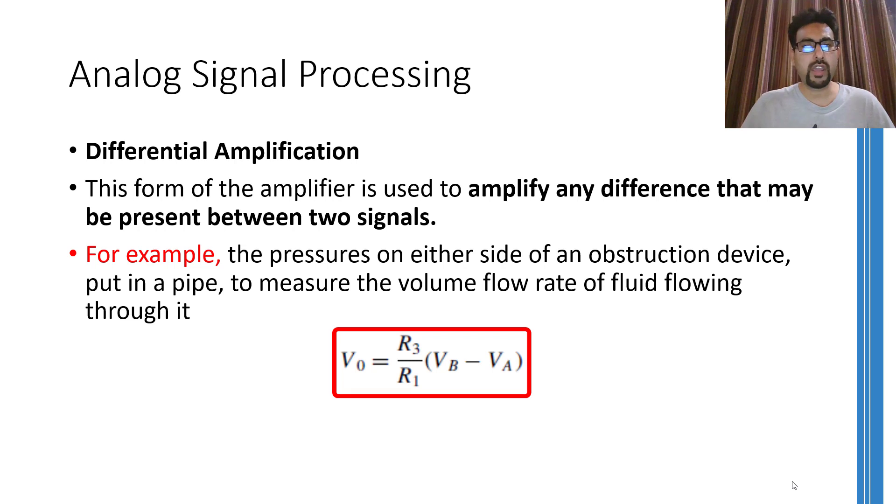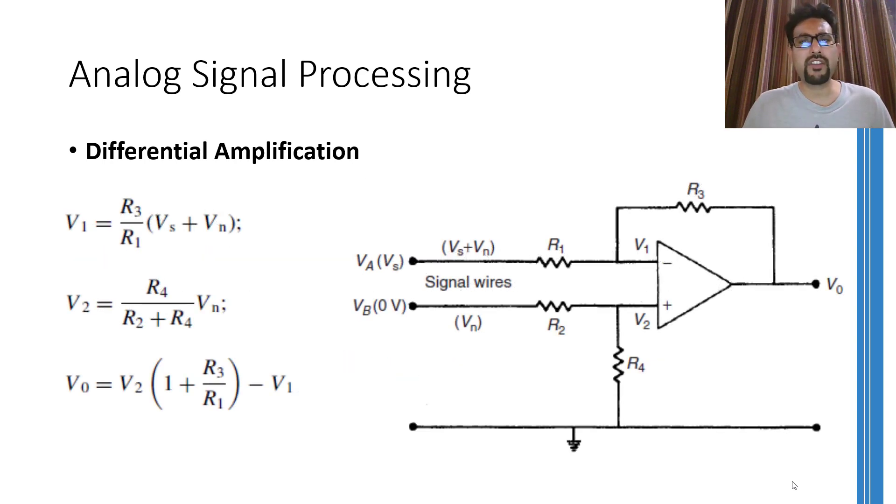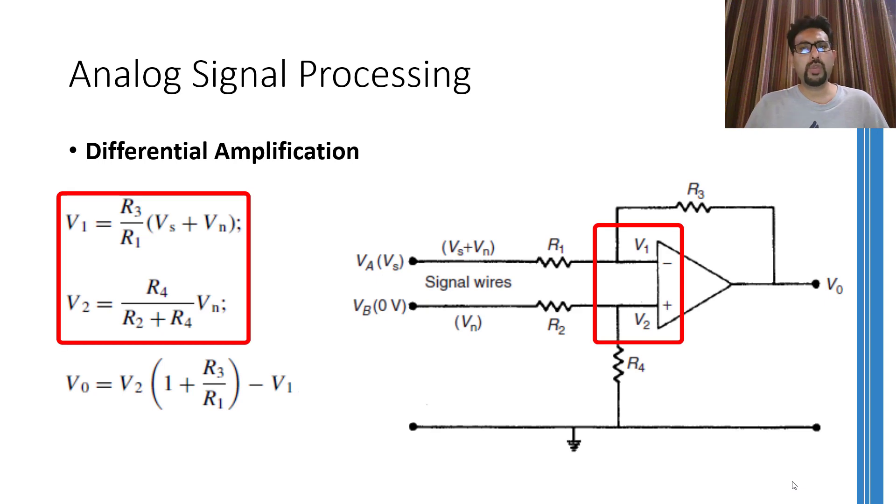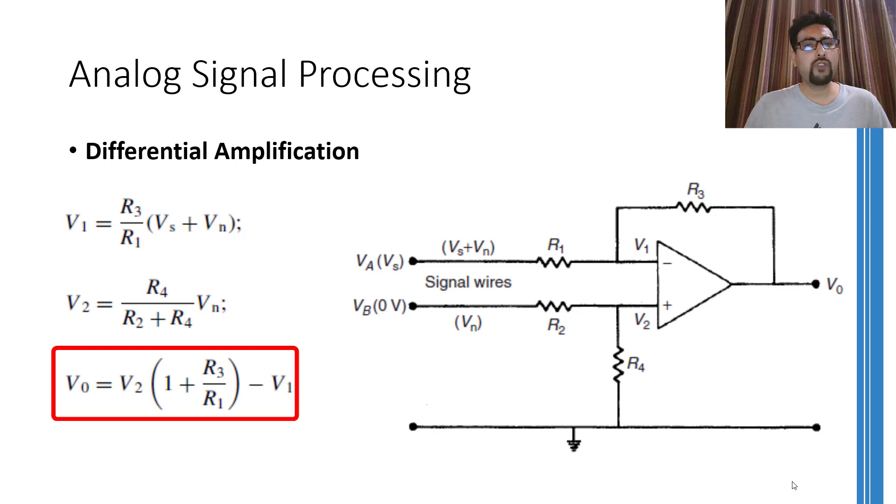So by equation over here, you can see that you are going to take the difference of two voltages and then the resulting voltage with some factor that can amplify or attenuate this difference. The circuit for implementation of this differential amplifier is shown over here. And the two signals that is Va and Vb are Vs and 0 volts respectively.